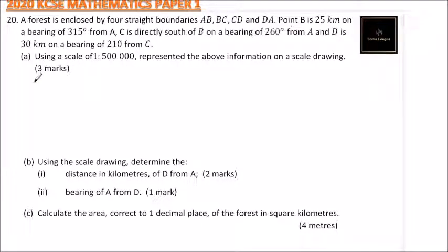This is question number 20. We are told a forest is enclosed by four straight boundaries: A, B, then B, C, then C, D, and D, A.